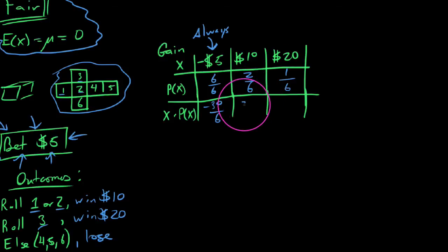And then 20 times 1/6 is 20/6. So what we wanted to do was find the average or the expected value, which means we need to sum all of these. We say -30 plus a positive 20 would be -10. And -10 plus a positive 20 would be positive 10. So we get 10/6, which reduces to 5/3. And in terms of a pure dollar amount, we'd say $1.66.